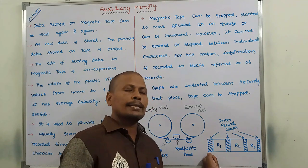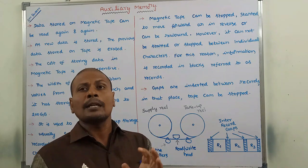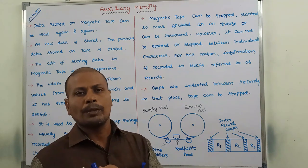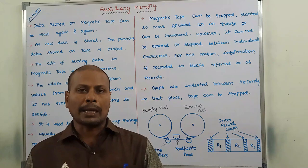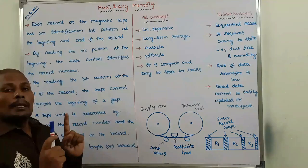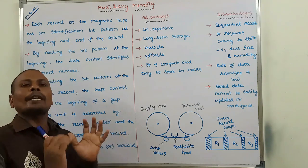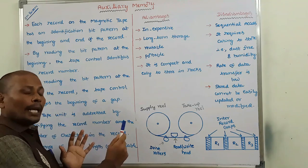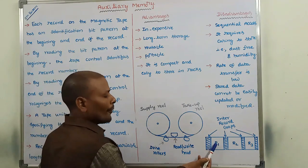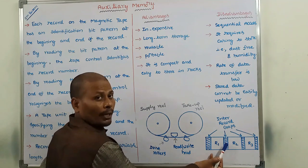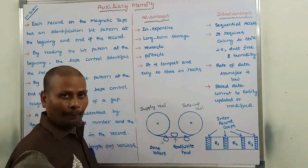The purpose of the inter-record gap is for stopping the magnetic tape — only in that time do we stop the moving of the magnetic tape. Each record on the magnetic tape has an identification bit pattern at the beginning and the end of the record. Before R1 record and after R1 record, some identification bit pattern is available in the form of a gap.